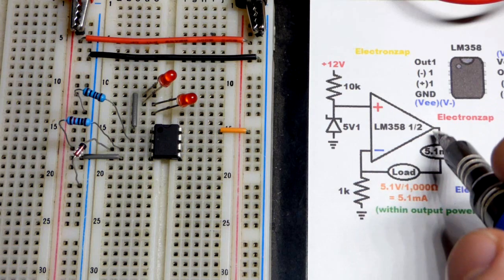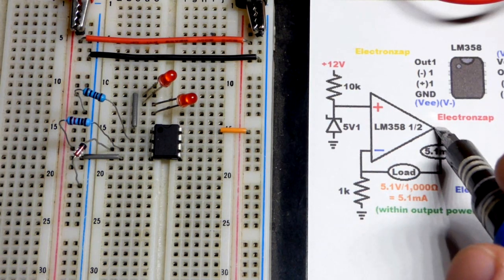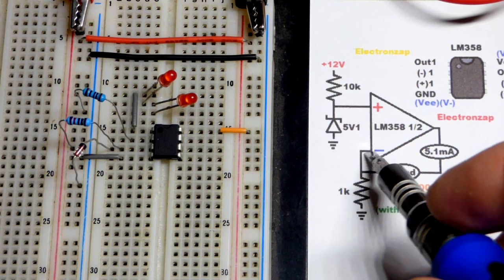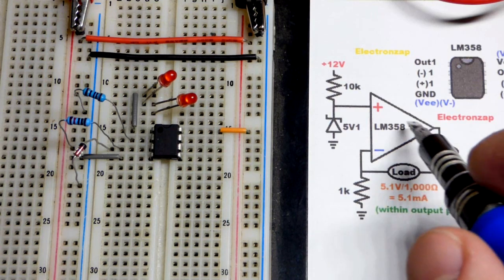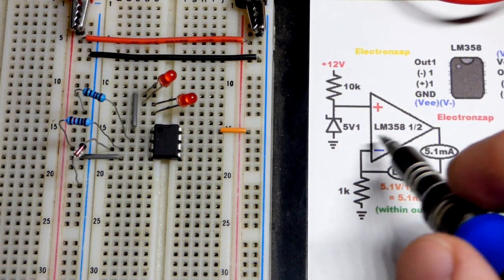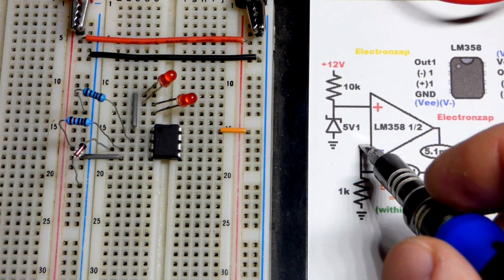So whenever you got negative feedback, the output going back to the inverting input, the op-amp does what it can to make those voltages equal.